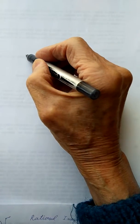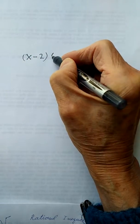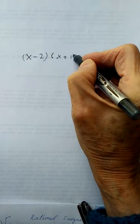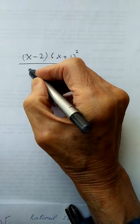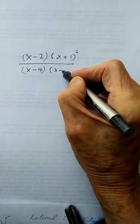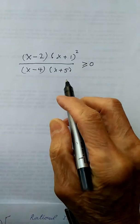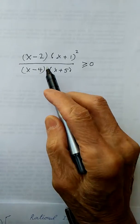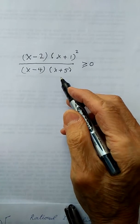The next example is: (x minus 2)(x plus 1) squared, divided by (x minus 4)(x plus 5), and it's larger than or equal to 0. Remember, if your rational function is not in factored form, the first step is to factor both the numerator and denominator.